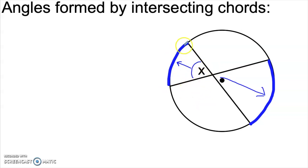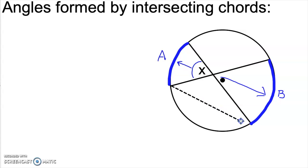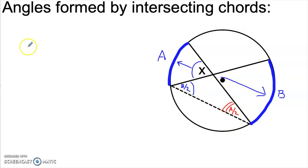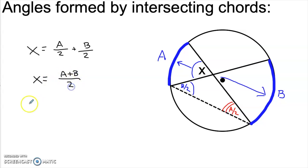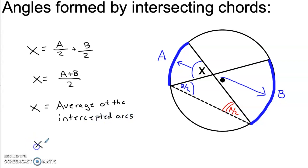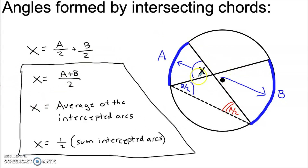The question is how does this angle relate to the size of its intercepted arcs? Let's call the arcs A and B, and do the same thing we did in the challenge problem. When I add a chord, I create a triangle where X is the exterior angle. One inscribed angle is half of B, or B over 2, and the other inscribed angle is half of A, or A over 2. Since X is the exterior angle, it equals the sum of the non-adjacent interior angles: X equals A over 2 plus B over 2, which is the same as A plus B divided by 2. In other words, X is the average of the intercepted arcs — one half the sum — and this is true any time you have an angle formed by two intersecting chords.